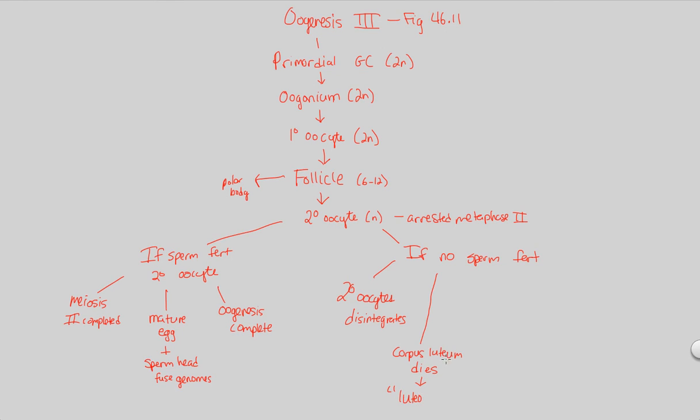And this is going to be referred to as a process known as luteo, for corpus luteum, luteolysis. The breakdown of a corpus luteum will happen if there's no sperm fertilization. In addition, a process, a cycle, is going to complete itself, and that is going to be menstruation. Menstruation will occur.